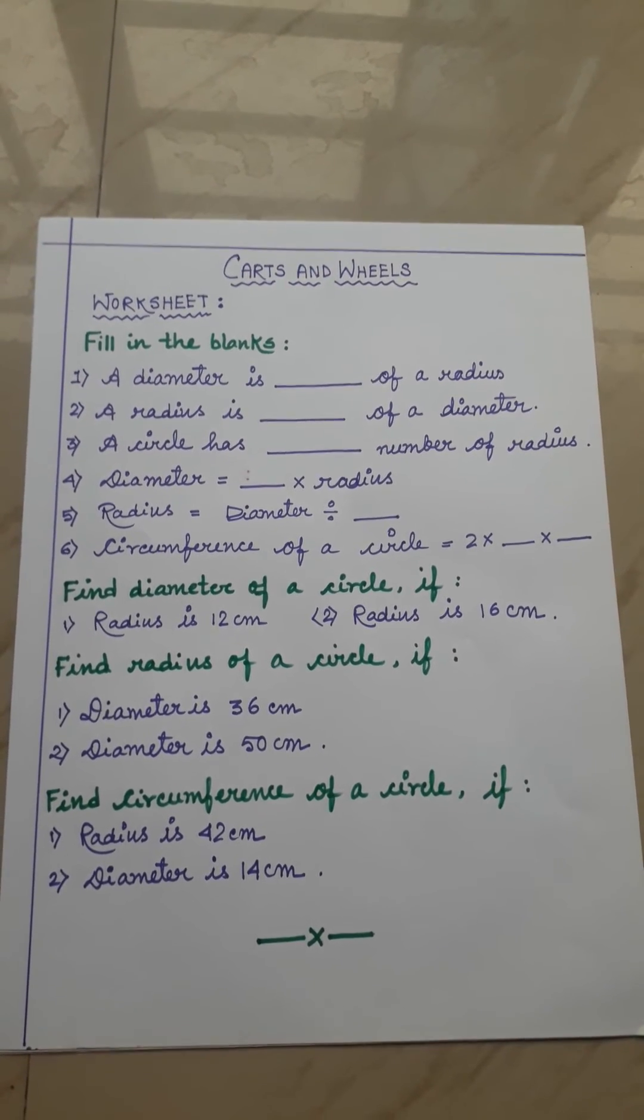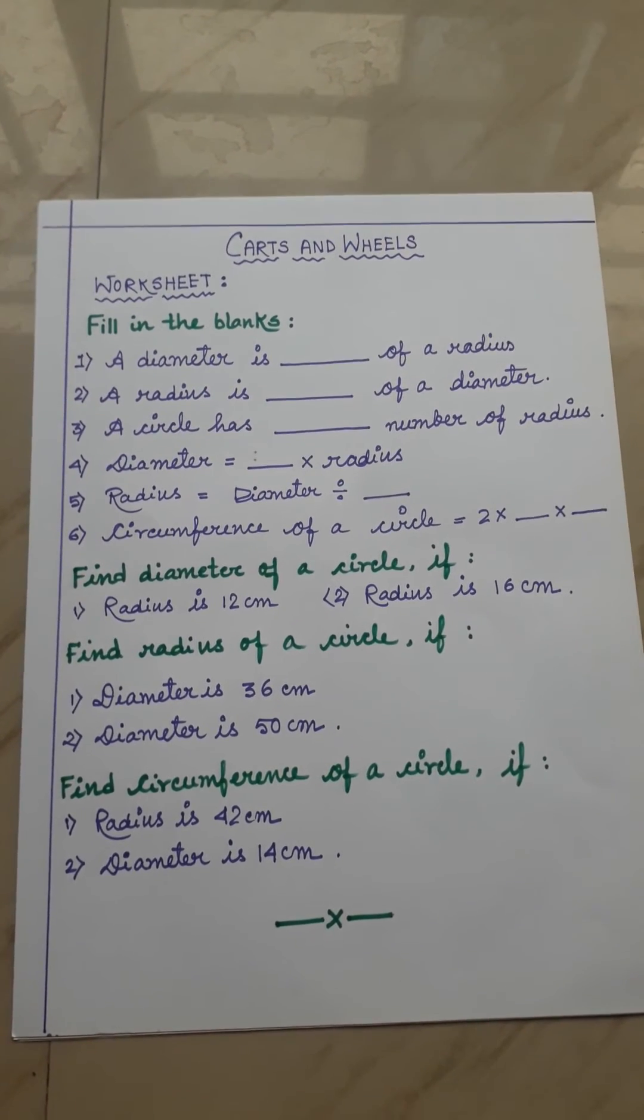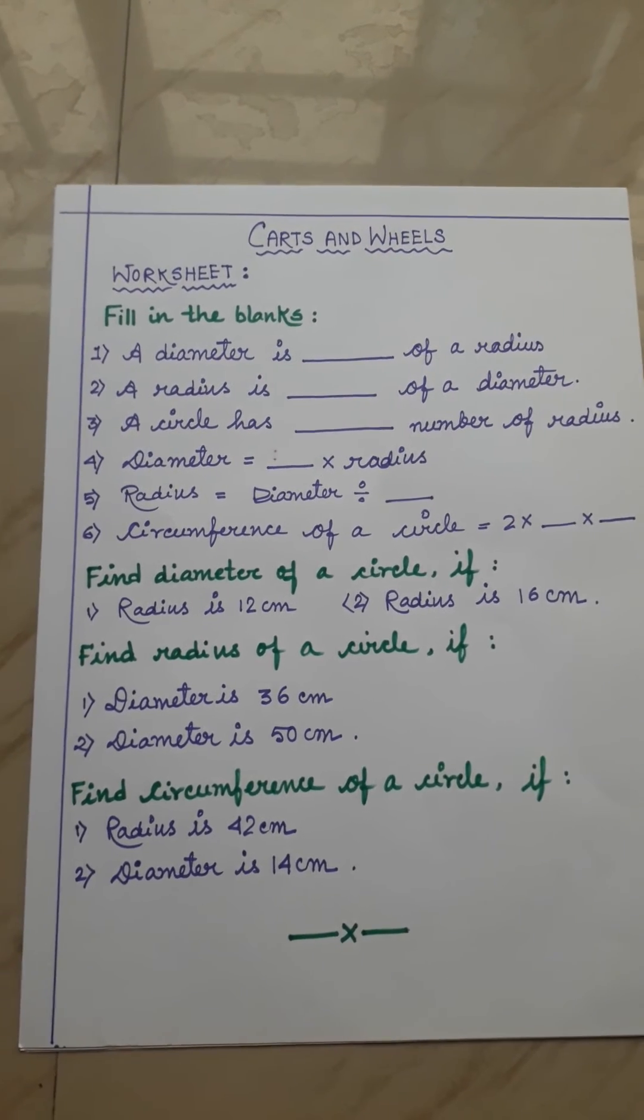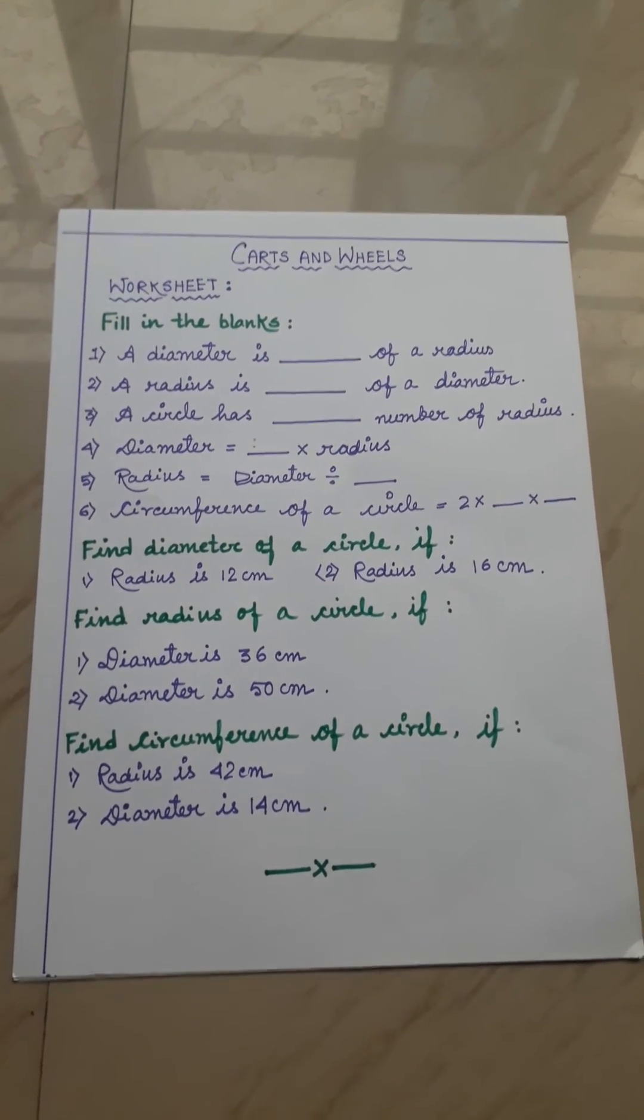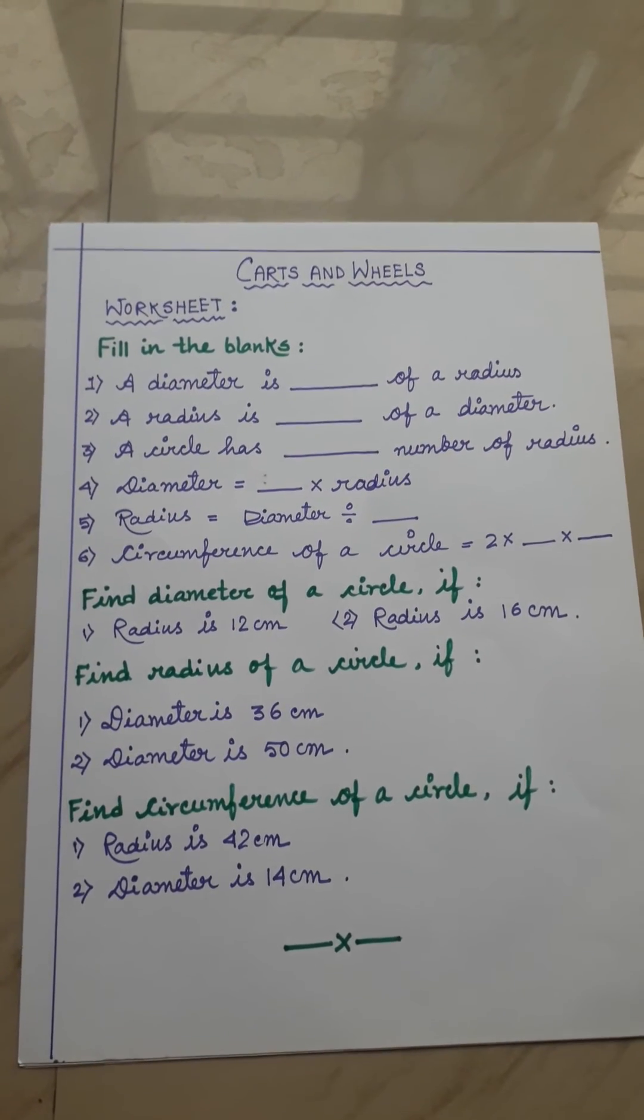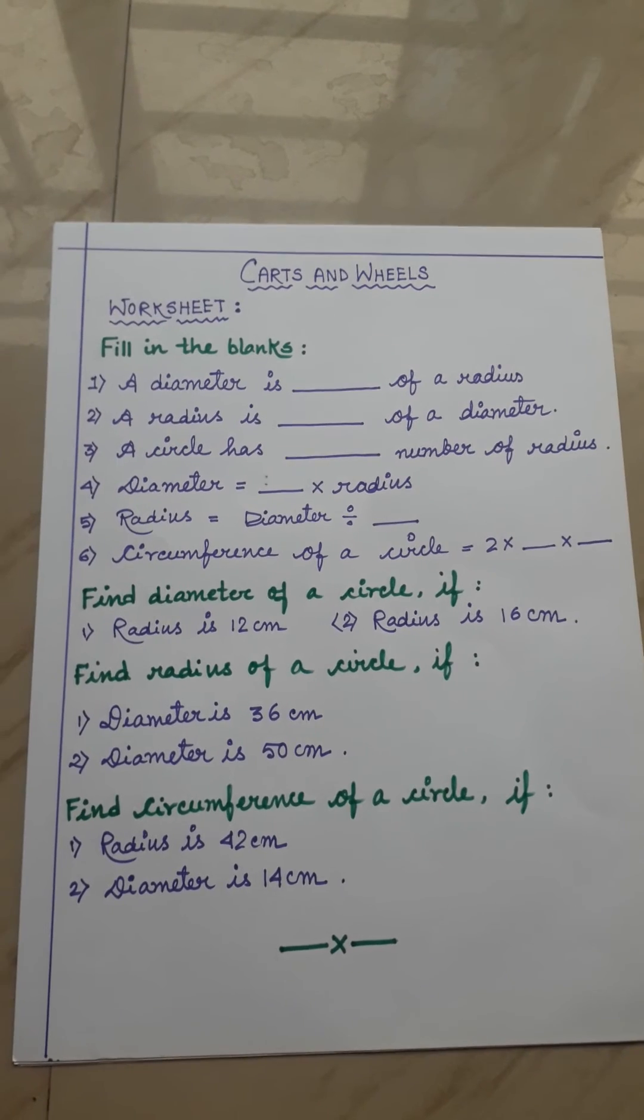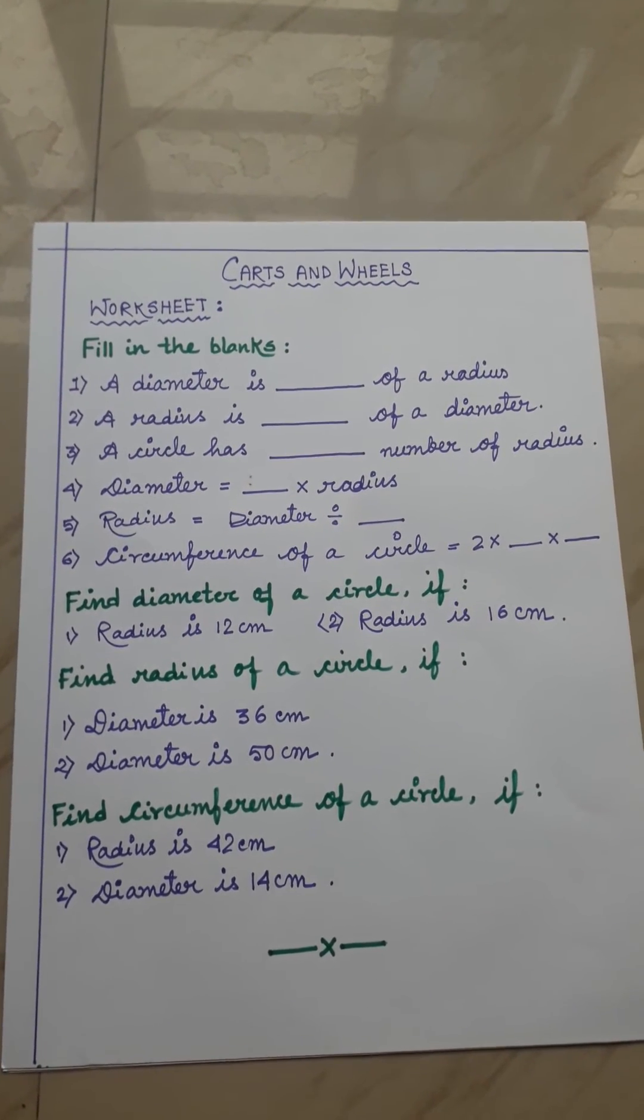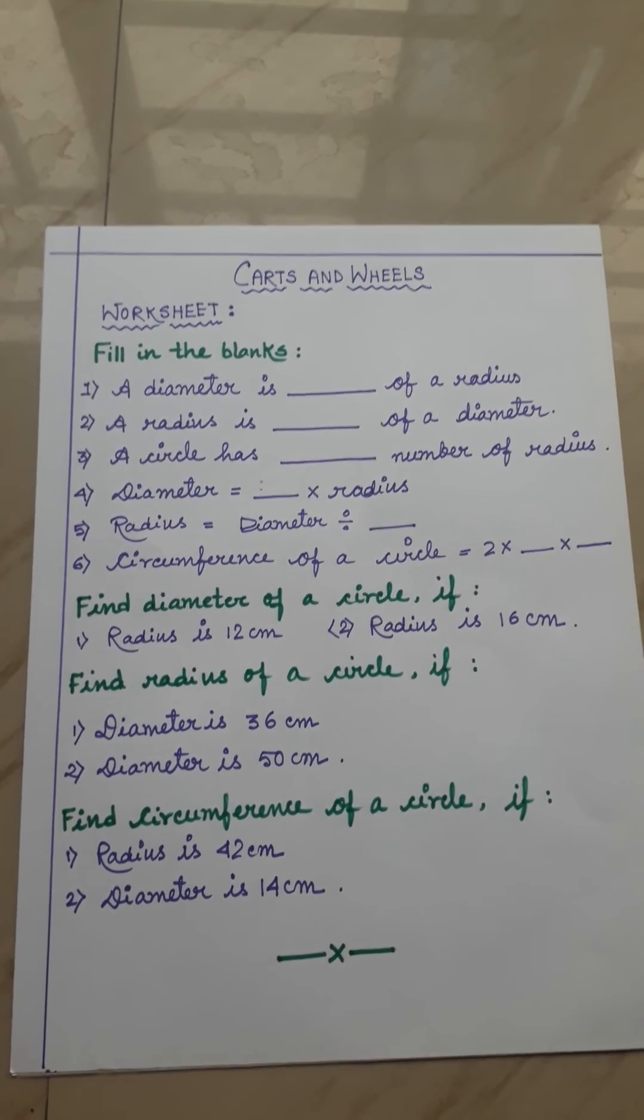Fifth number is: find circumference of a circle if (1) radius is 42 centimeter and (2) diameter is 14 centimeter. You have to find out the circumference of a circle. In the first one radius is given, but in the second one diameter is given, so I want to see how you do this sum where diameter is given.